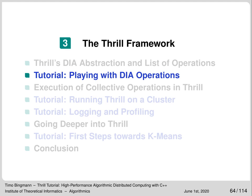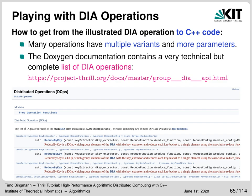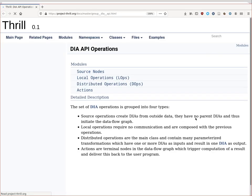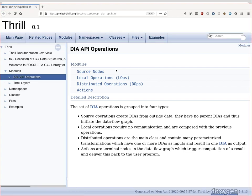In this next section I will show you how to actually code using these DIA operations. How do you figure out the actual C++ syntax? The easiest way is to look at example code from the Thrill repository, or to look at the function definition in the DOXYGEN documentation available at the link shown here.